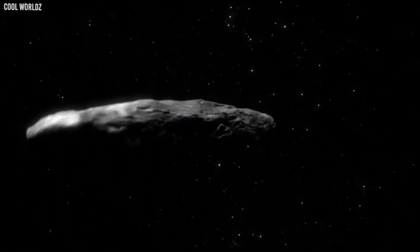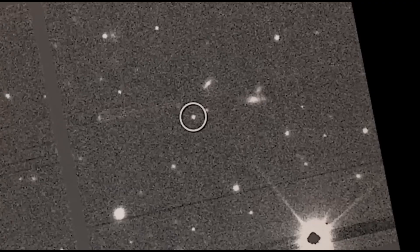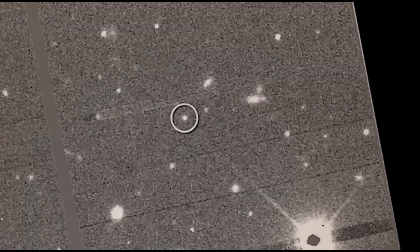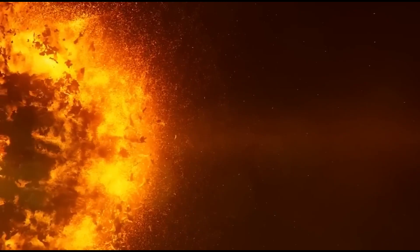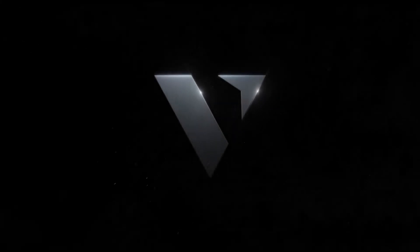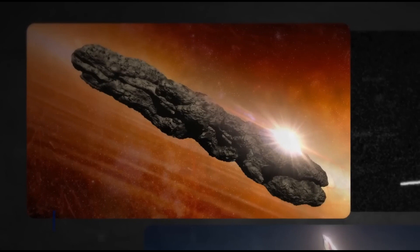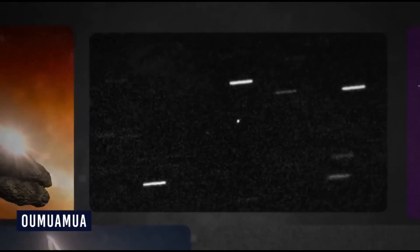While it's not uncommon for objects from interstellar space to occasionally wander into our solar neighborhood, Oumuamua's arrival caught everyone off guard. What initially caught the attention of scientists was Oumuamua's peculiar appearance. Rather than the typical rounded or irregular shape of asteroids, it boasted a striking elongated form resembling a sausage or hot dog. This departure from the norm sparked intense curiosity.